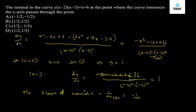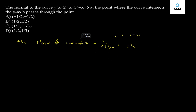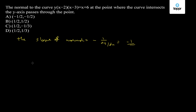The normal passes through the point (0, 1) and has slope -1. So the equation of the line will be y - 1 = -1(x), which becomes x + y = 1.